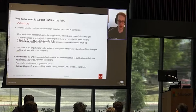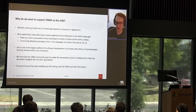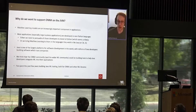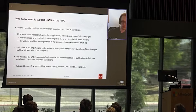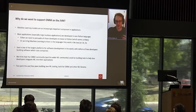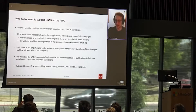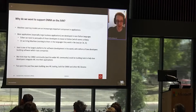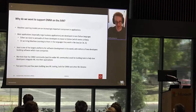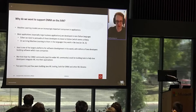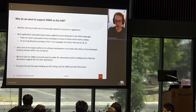One question: everyone's talking about Python today. Why would we want to support ONNX on the JVM or on the Java platform? Well, ML models are increasingly important in basically every application, and most applications — especially large business applications of the kind we're interested in at Oracle — are written in languages that are not Python.